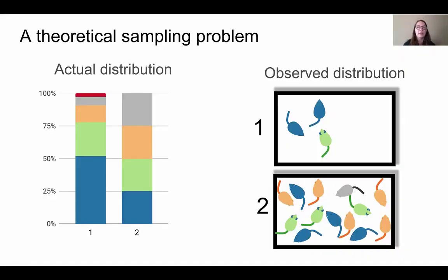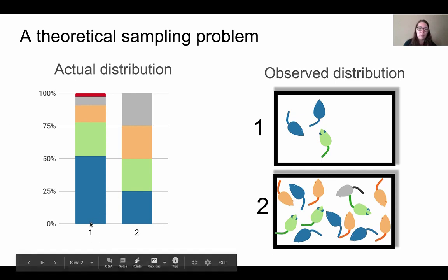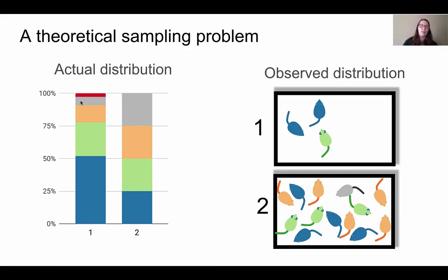To get in the right mindset, let's first think about a project that requires sampling. To keep it simple, let's say we're sampling the color of mice within a community and comparing two samples. On the left we can see the actual distribution of colored mice in the community: maybe one red mouse, a couple of gray mice, a few yellow mice, some green mice, and a lot of blue mice.